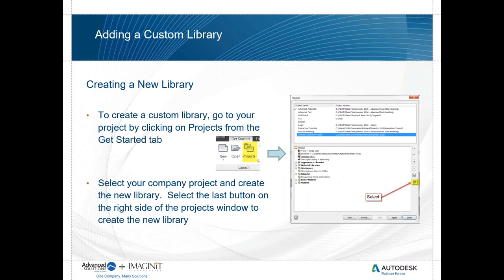To begin with, we start in the project file. The project file controls our libraries. The first rule of a project file is I can't modify it as long as I have files open. So I have to make sure that before making any changes, all files within a project are closed. Once in my project explorer, there's a button on the lower right-hand side that allows me to review the current libraries, how they're set up, and even create custom libraries.